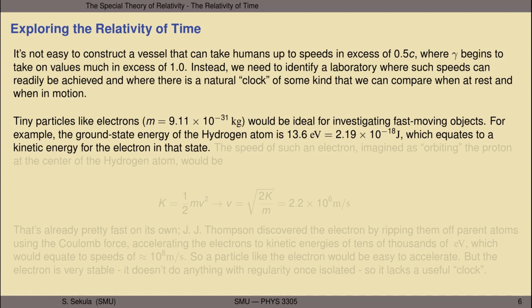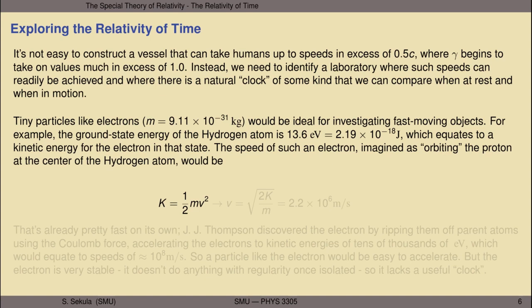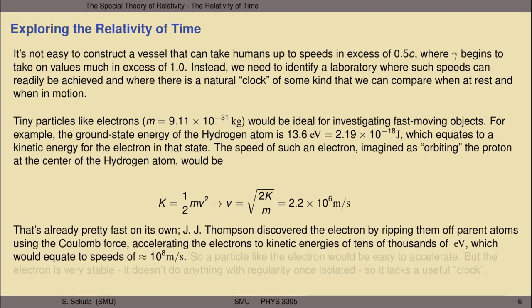That comes out to about 2.19 times 10 to the minus 18 joules of energy. If you translate that into a kinetic energy for the electron, you can calculate the speed of the electron in that hydrogen state, treating it as orbiting like a little planet around the proton under the Coulomb force. Using the classical kinetic energy, one-half mv-squared, and solving for speed, we find about 2.2 times 10 to the sixth meters per second—already about 1% of the speed of light, without doing anything exotic.